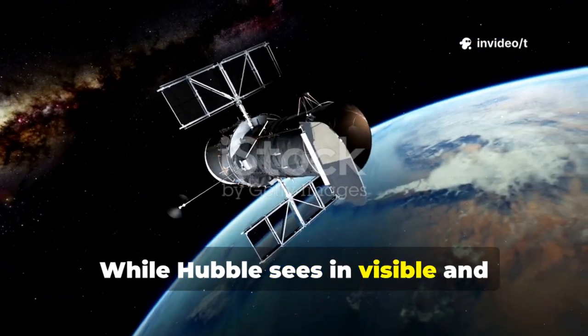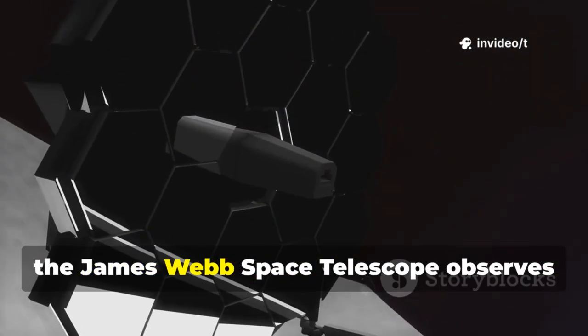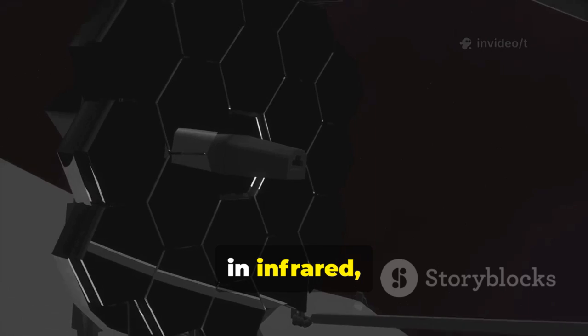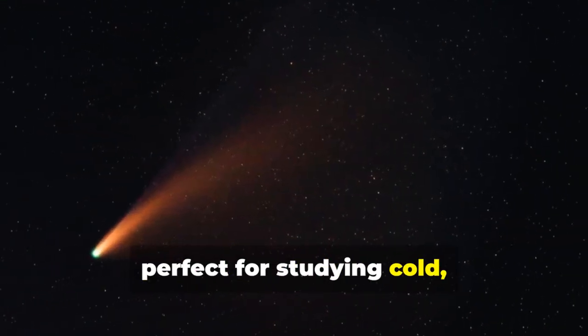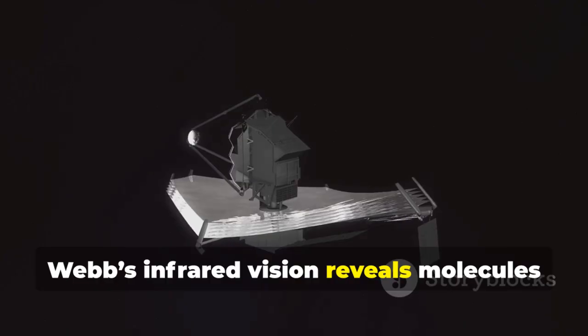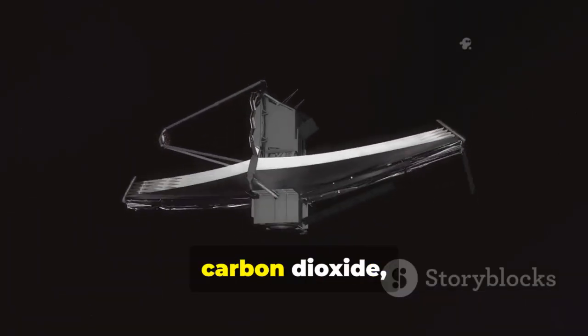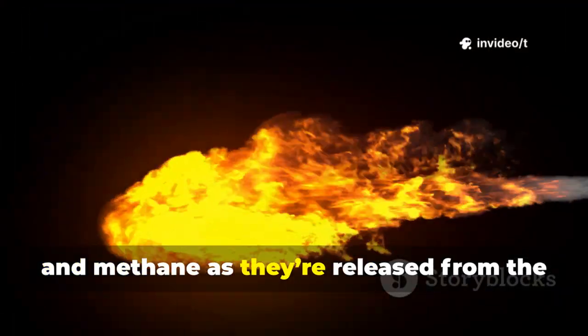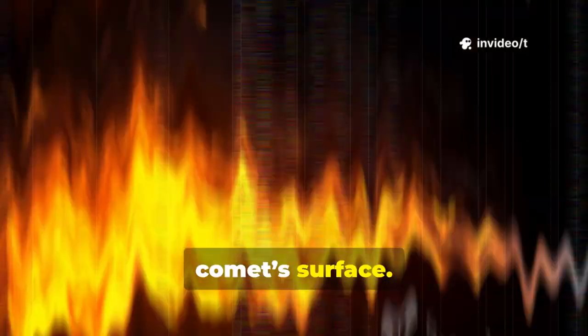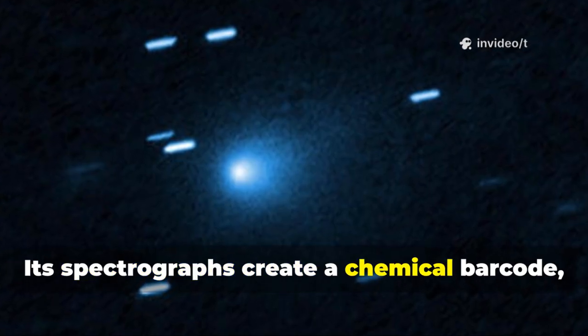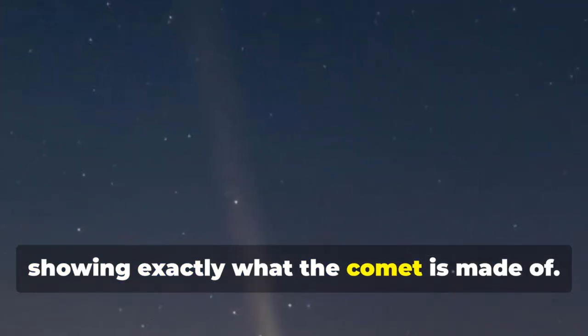While Hubble sees visible and ultraviolet light, the James Webb Space Telescope observes in infrared, perfect for studying cold, dusty comets. Webb's infrared vision reveals molecules like water, carbon dioxide, and methane as they're released from the comet's surface. Its spectrographs create a chemical barcode showing exactly what the comet is made of.